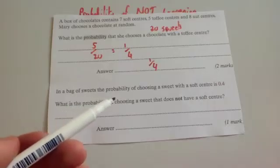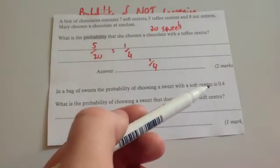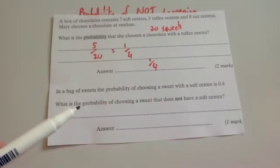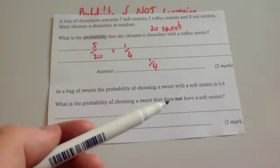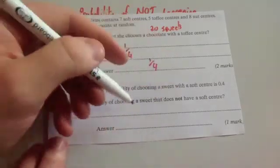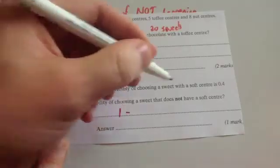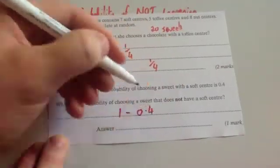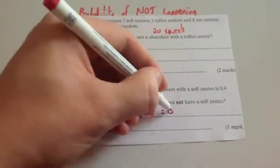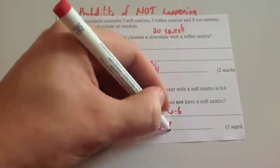In a bag of sweets, the probability of choosing a sweet with a soft center is 0.4. What is the probability of choosing a sweet that does not have a soft center? Well, because the probabilities add together to give you 1, you're going to do 1 subtract 0.4. And 1 subtract 0.4 is 0.6. So the answer would be 0.6.